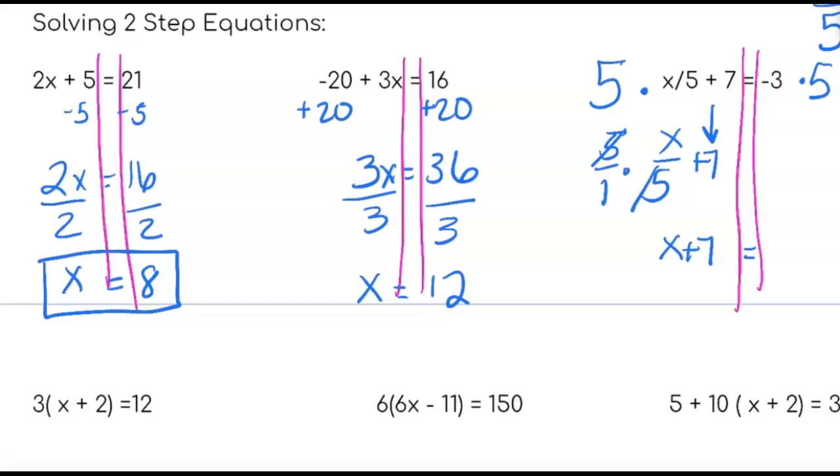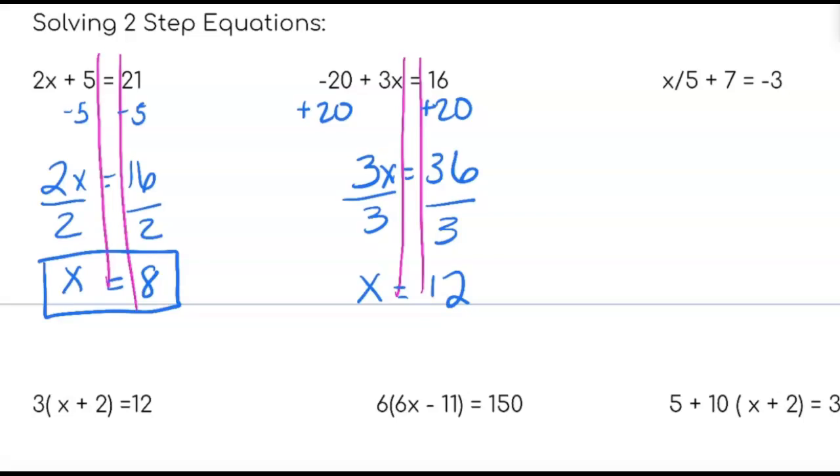Oops I totally did that wrong. Okay I realized I made a mistake so let's start again. Draw your railroad tracks. First move what is far away from the x. So that is the positive seven. So it is opposite of positive seven. It's minus seven. So do the opposite and balance. So this cancels out. What I'm left with is x over five equals negative three minus seven, which is negative ten.